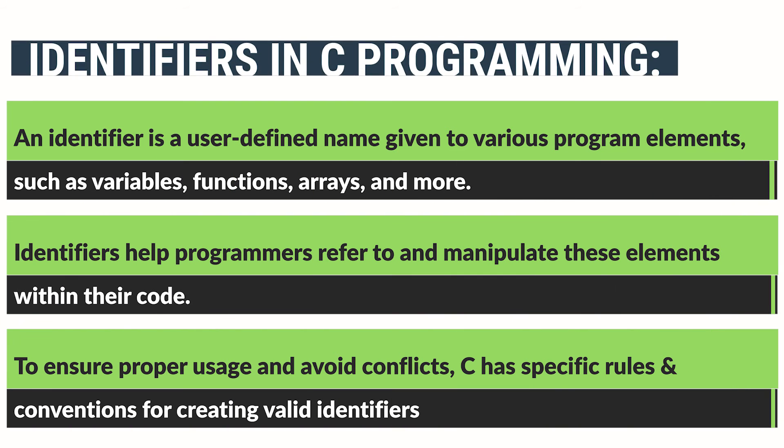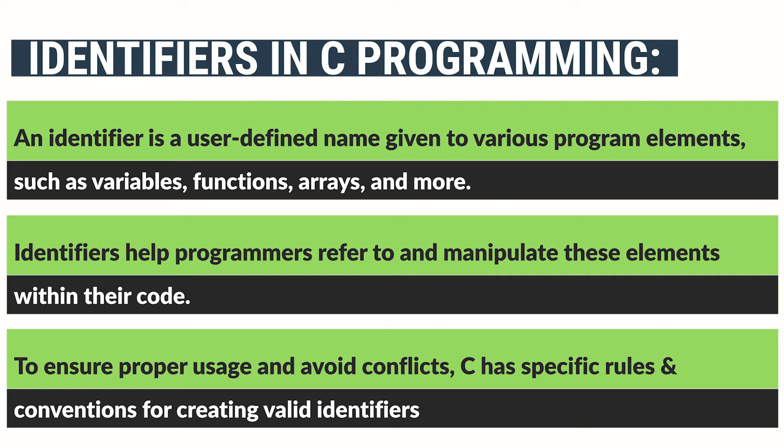Identifiers in C programming. An identifier is a user-defined name given to various program elements, such as variables, functions, arrays, and more.